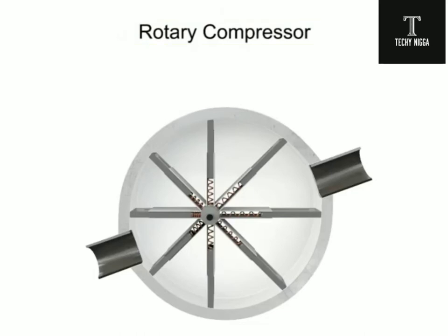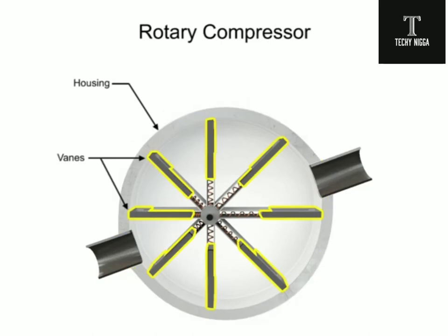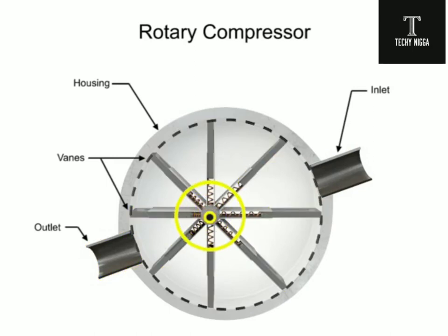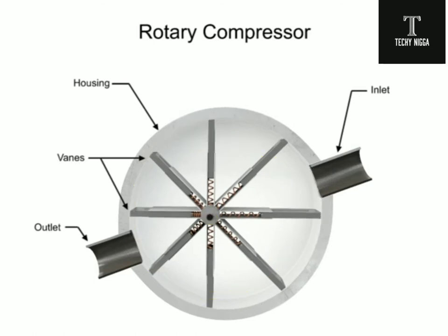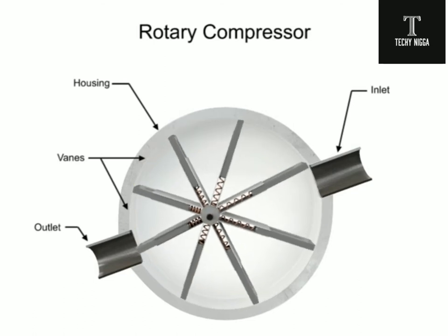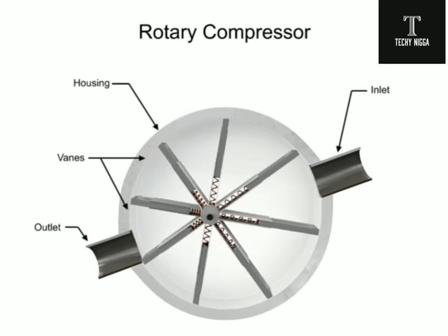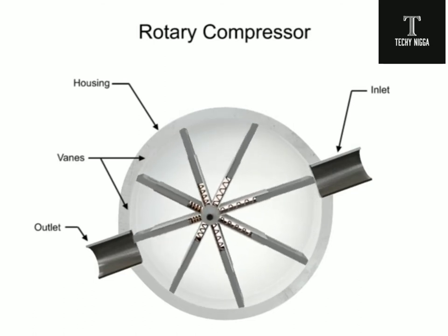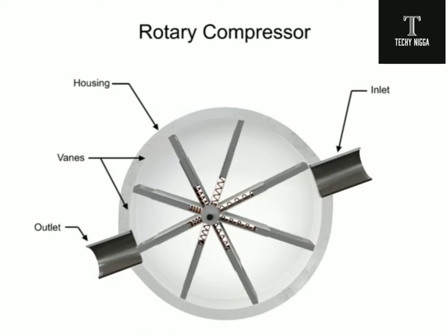Rotary compressors typically consist of a cylindrical housing with adjustable rotary vanes, an inlet, and an outlet. The vanes are on an off-center drive shaft. As the shaft rotates, the vanes slide in and out to maintain contact with the cylindrical compressor wall.